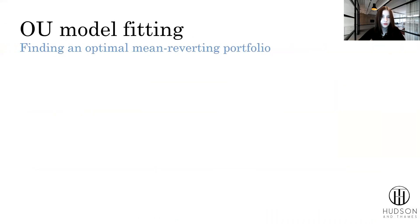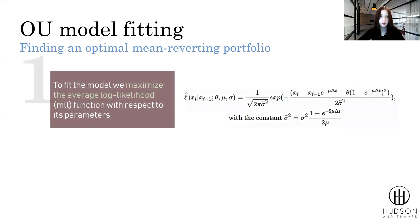Then we need to fit the OU model to our data and find an optimal mean reversion portfolio. The first step is to fit the model by maximizing the average log-likelihood function with respect to its parameters theta, mu, and sigma.